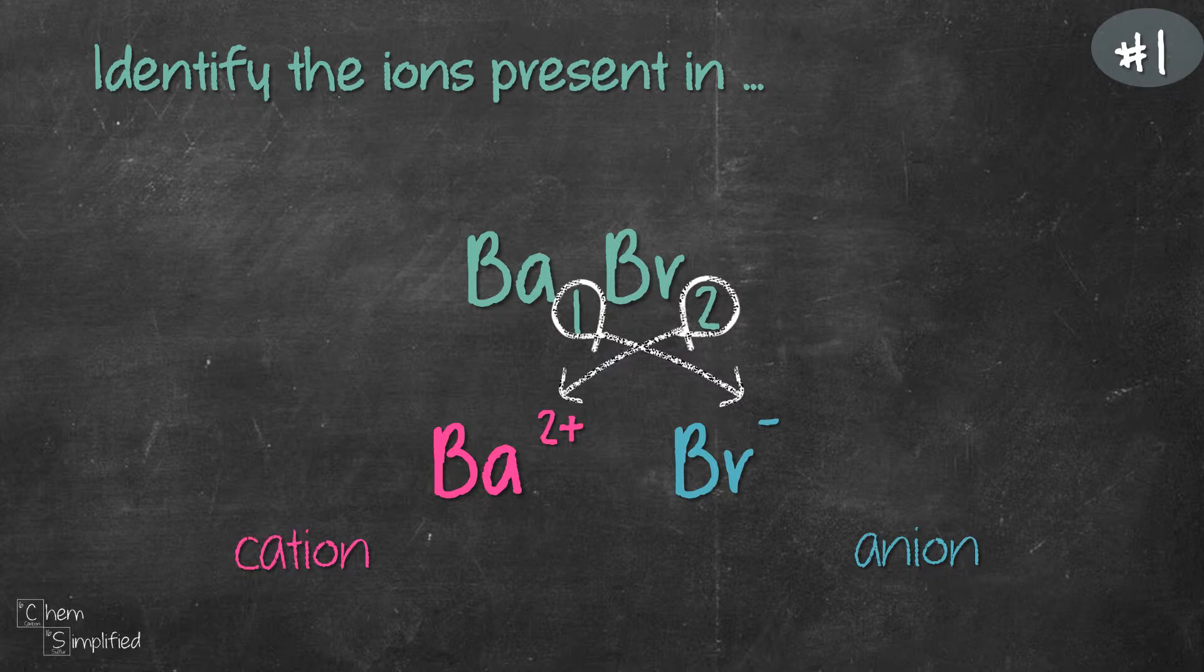We should always double check the charge, at least for the cation. You'll see why when we go through our final example. So for this example, we have Ba. Ba is from group 2, so that means group 2 metals will form a +2 charge. And looks like we got it right.